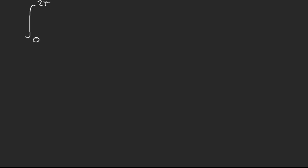In periodicity, we will be dealing with integrals like from 0 to 2π — sometimes π, but most of the time it would be 2π or even more. Pretty much, it's just in a form like sine(ax) times cosine(bx). Usually we would do trig identities to solve this integral.